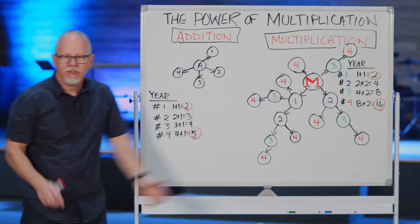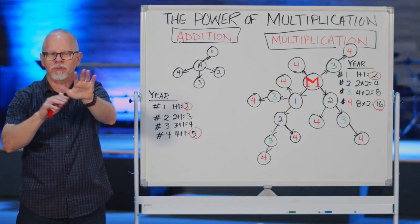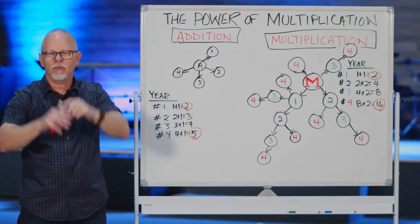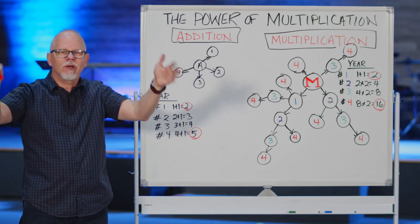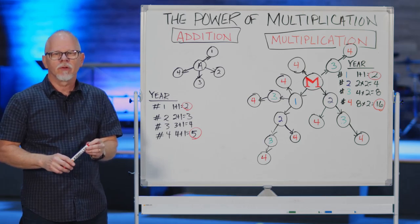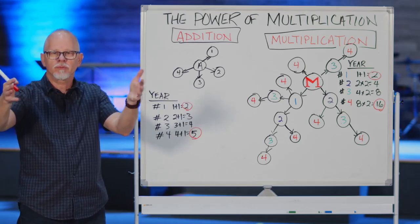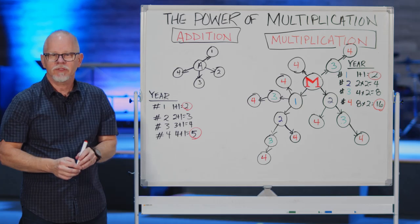I've seen it happen. We started with five disciples, four guys I was discipling in my first church. By the end of 20 years, we had 125 disciple makers. Think about that. We had 2000 people in the groups led by those 125 disciple makers.